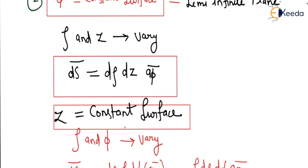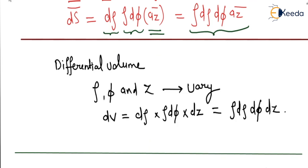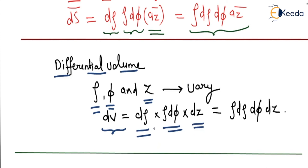Similarly, for z equals constant surface, if z is constant then rho and phi will vary. The variation of rho is dρ and the variation of phi is rho dφ, and the direction is perpendicular, which is az. So the ds vector is rho dρ dφ az. For the differential volume, all parameters rho, phi, and z vary, so dV equals dρ times rho dφ times dz, giving rho dρ dφ dz.